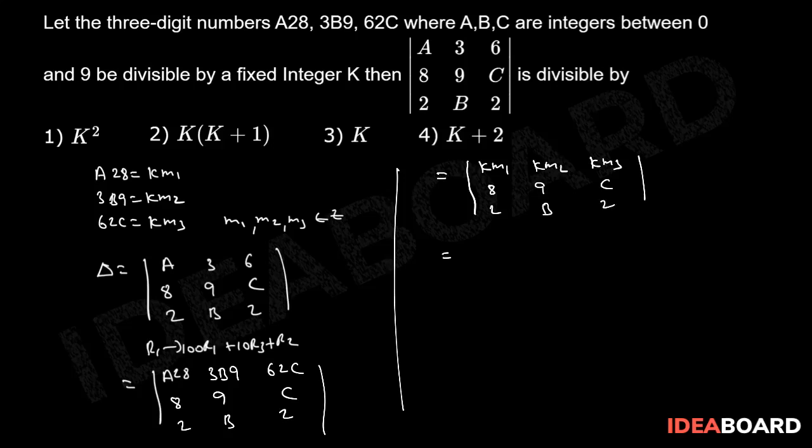Now, this will be equal to - now we can take K as common from the first row. Therefore, we have K into delta of M1, M2, M3, 8, 9, C, 2, B, 2.